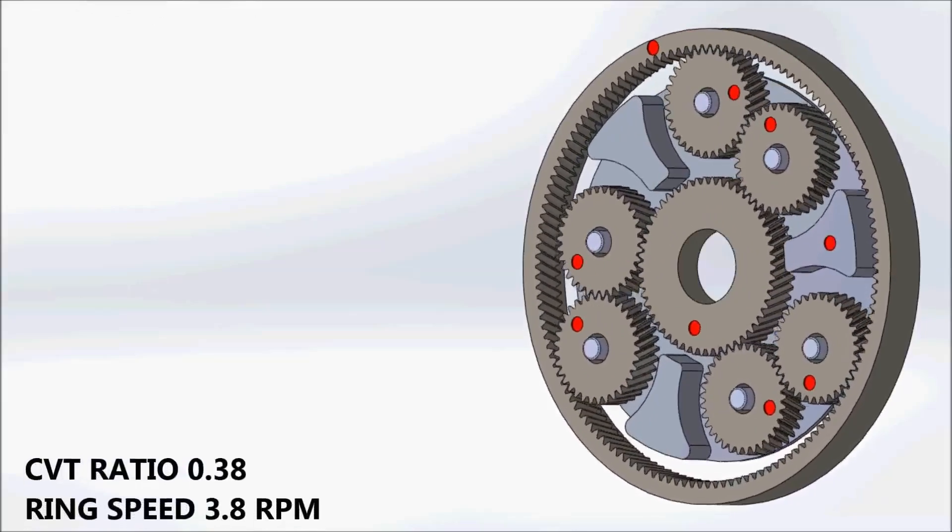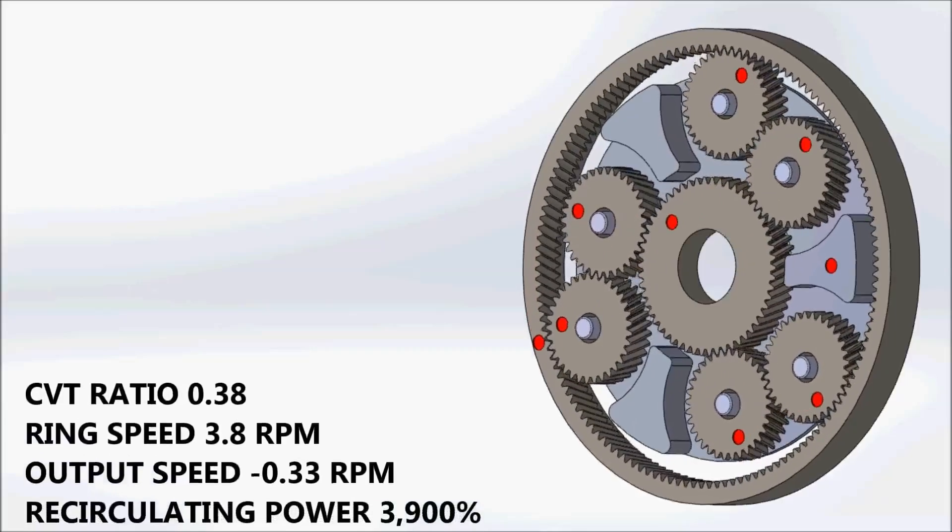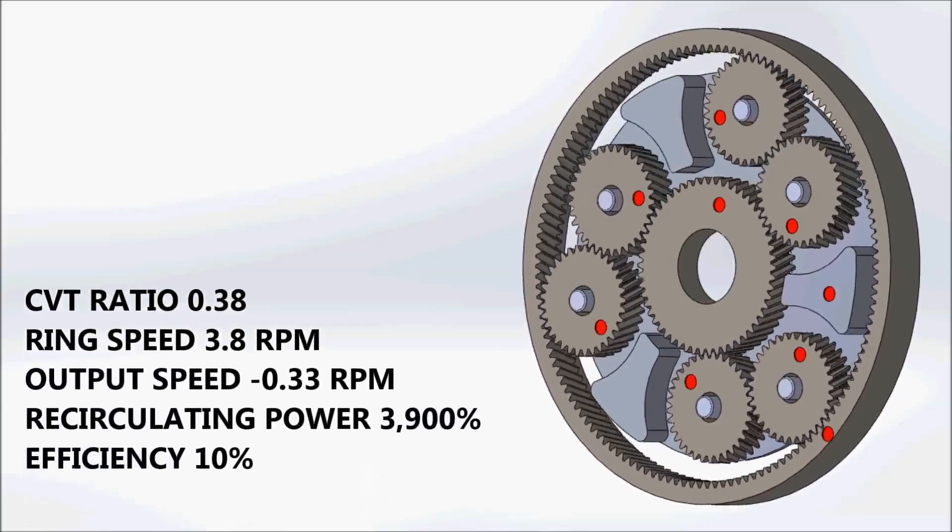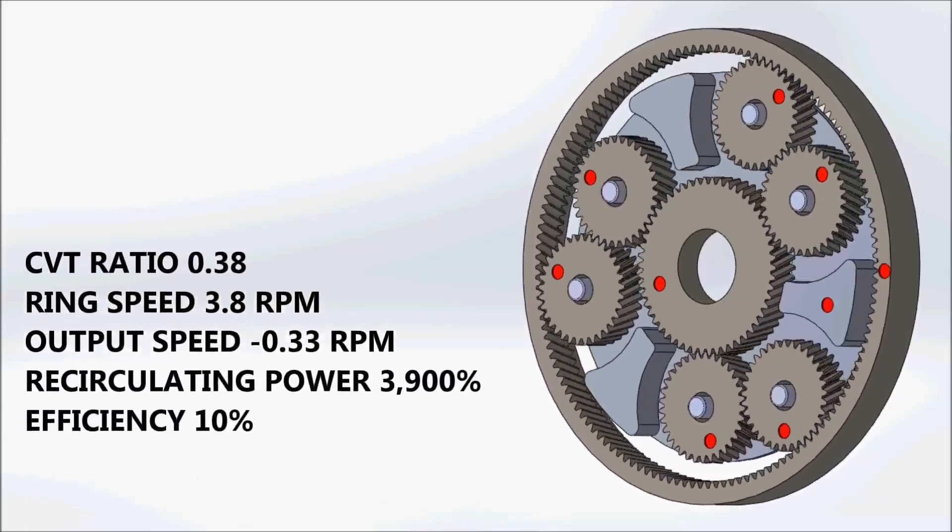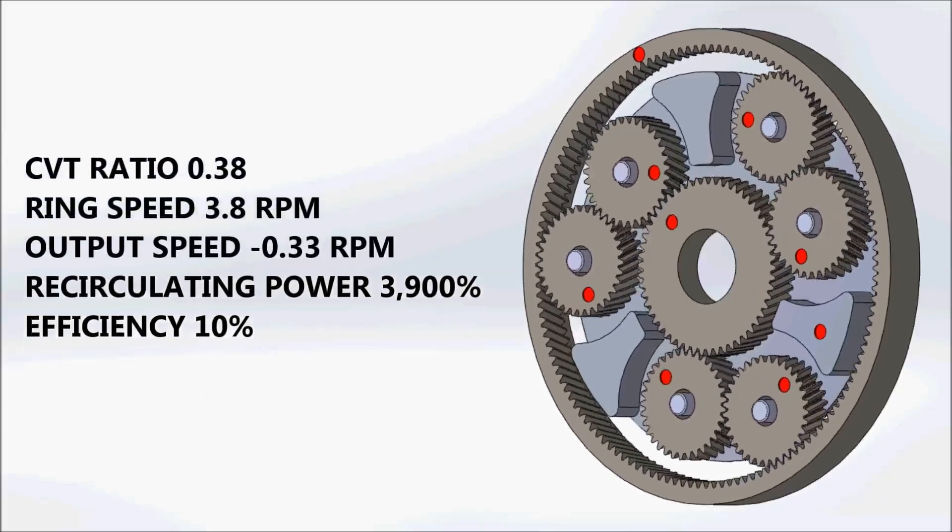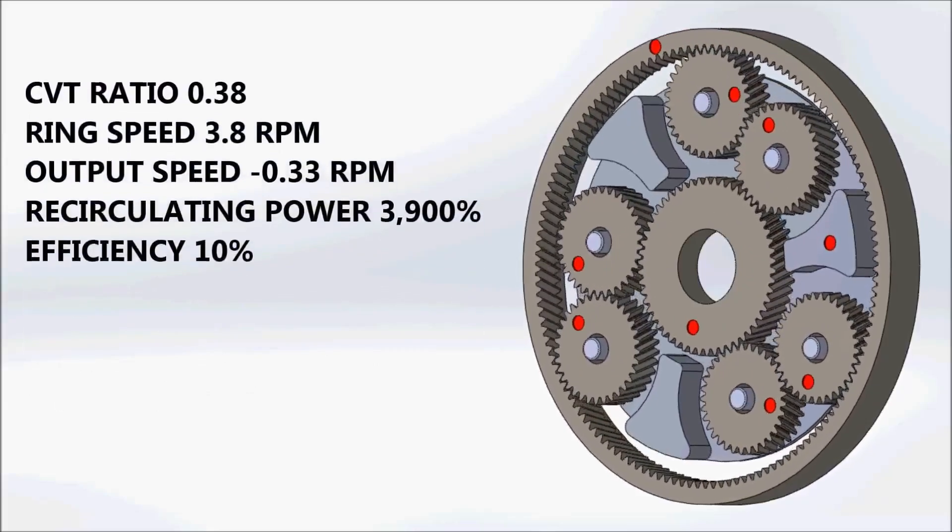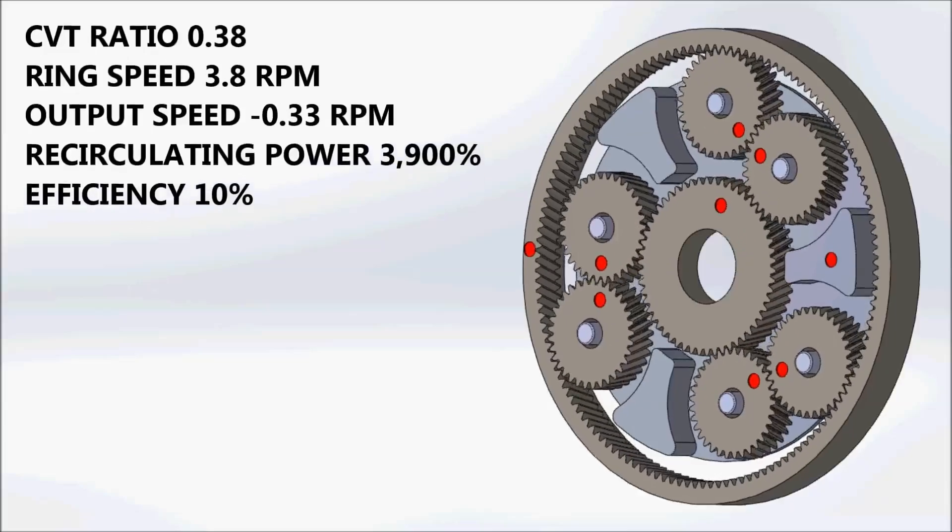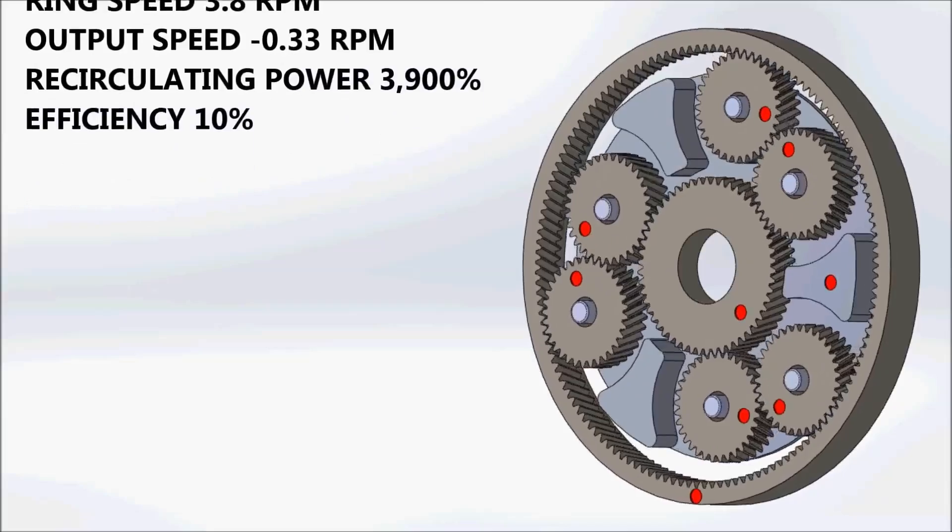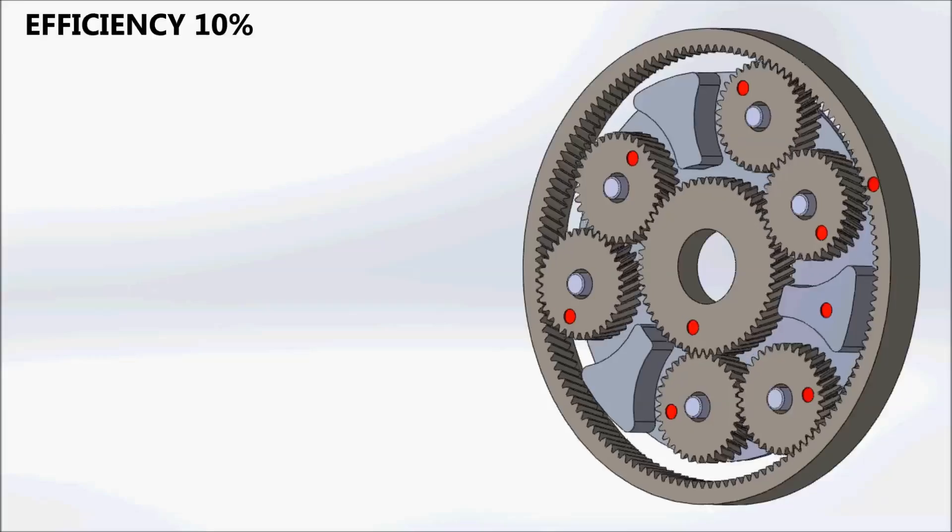As the CVT ratio moves away from extreme low gear to a ratio of 0.38, and without varying the speed of the sun, the output from the planet carrier becomes a reverse speed of 0.33 rpm. The vehicle is now driving in reverse at a very low speed. The system is operating with extremely high levels of recirculating power, reducing the overall efficiency to 10%.